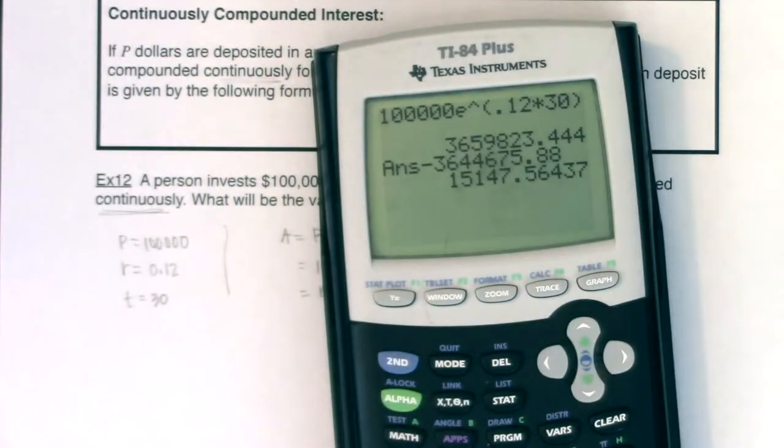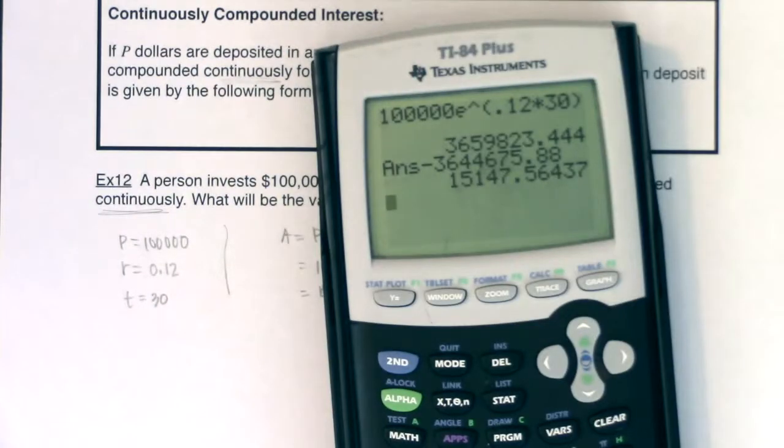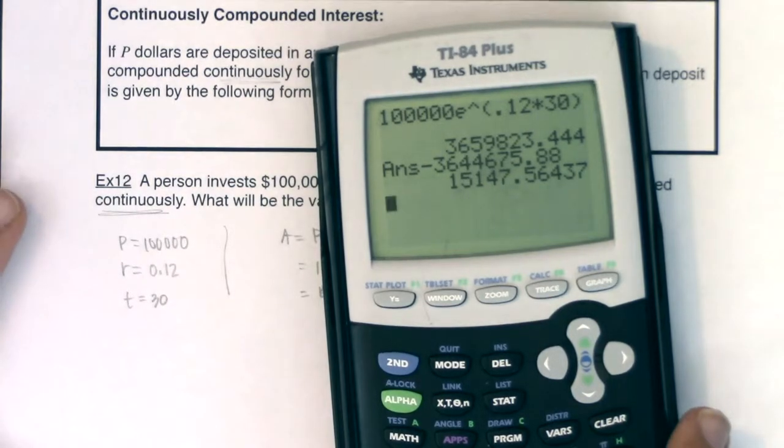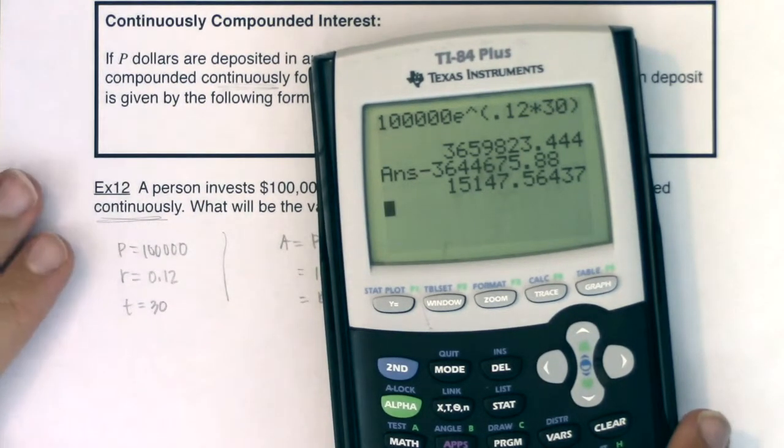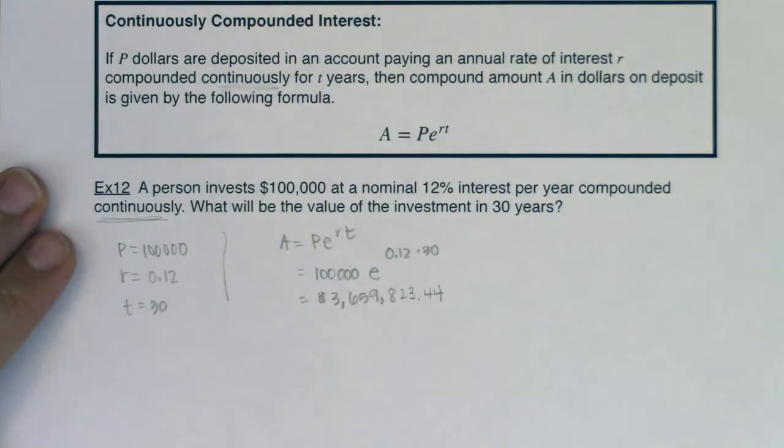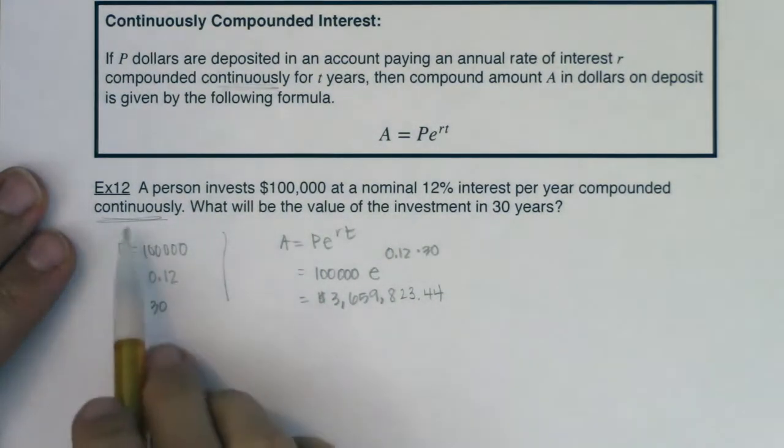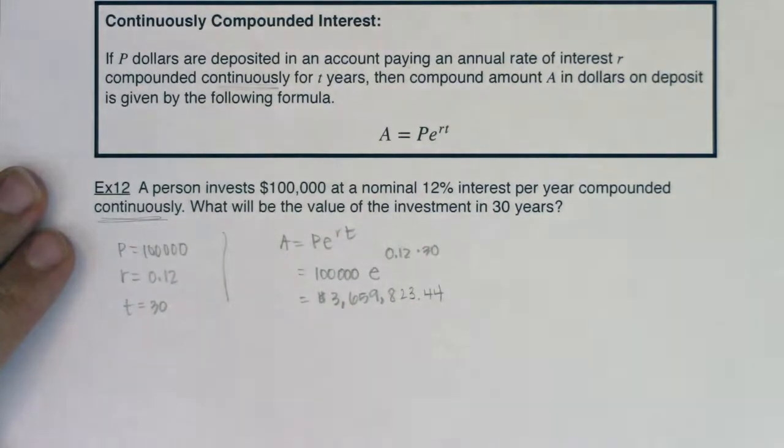Admittedly, that's over 30 years, but I'll take an extra $15,000. So there's your look at continuously compounded interest. If you ever see the phrase continuously compounded, you're going to use the PERT formula.